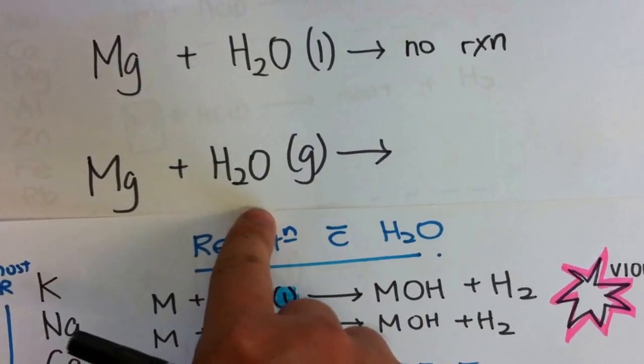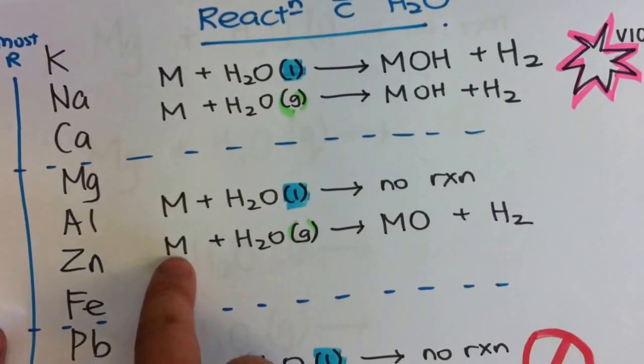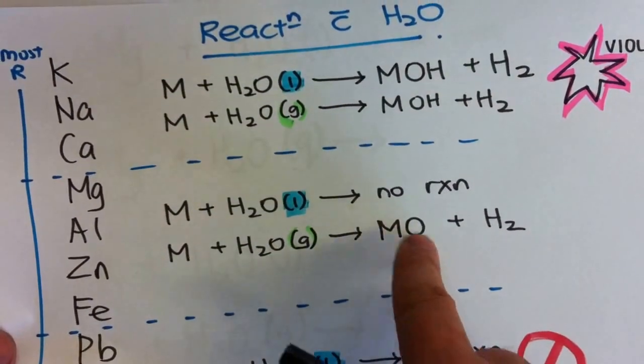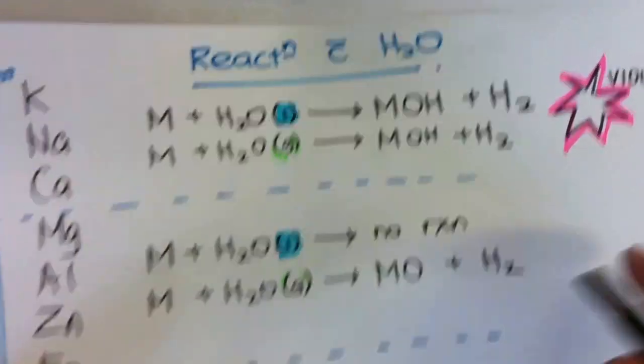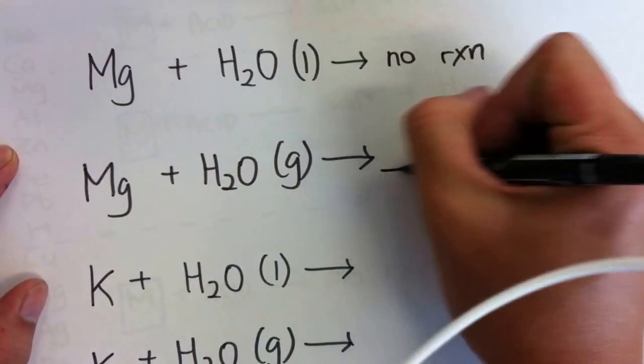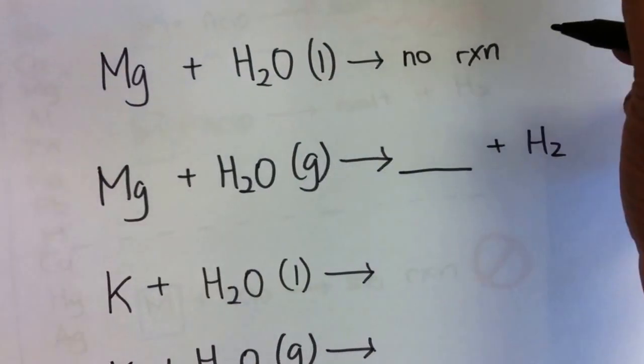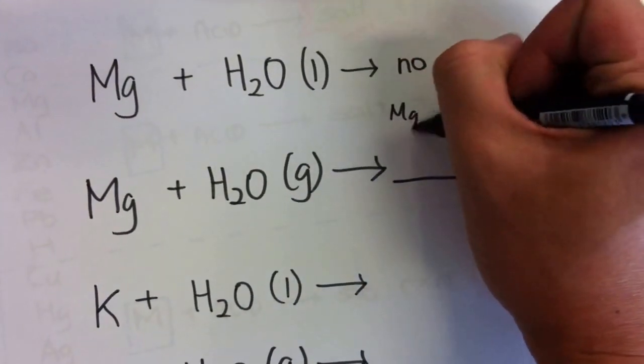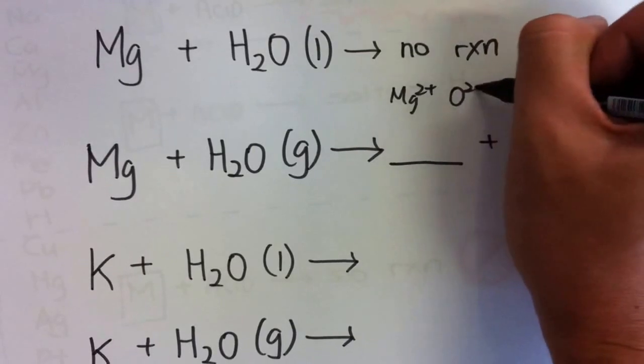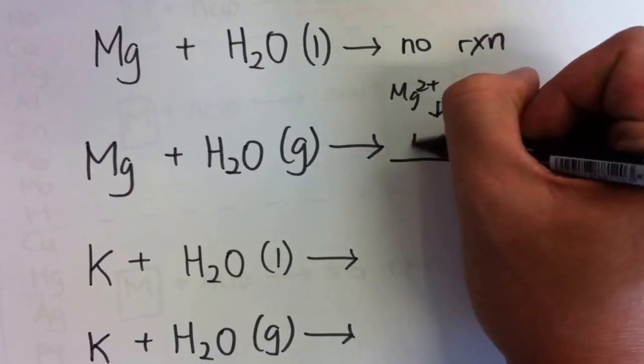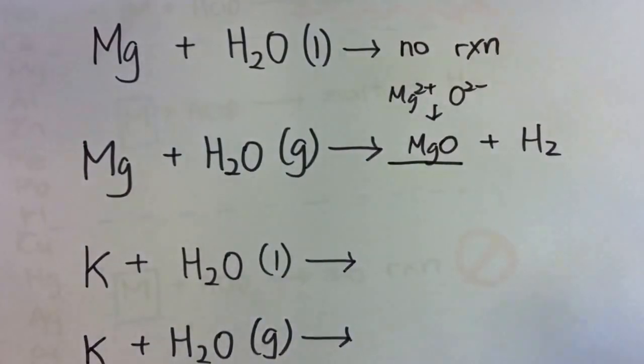In the case of steam, magnesium plus steam. Magnesium plus steam. That is a reaction. We get magnesium oxide plus H2. So we get magnesium oxide plus H2. Magnesium oxide will be Mg2+ O2-. So you get MgO.